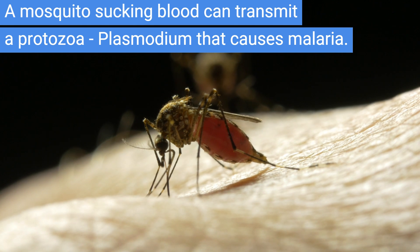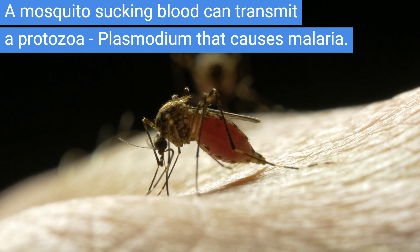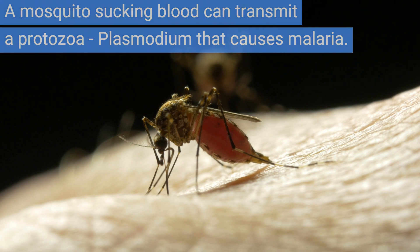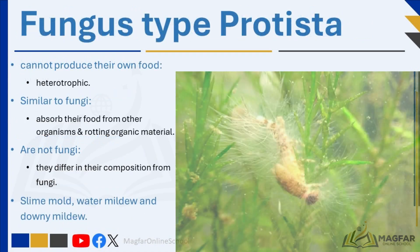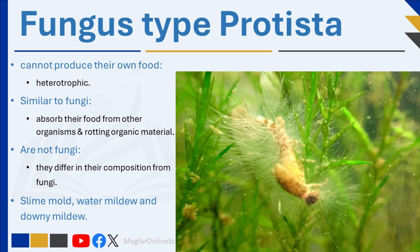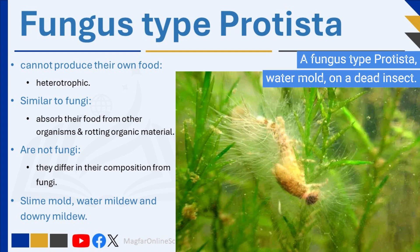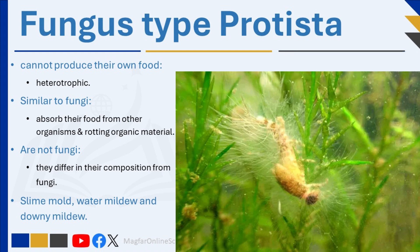The parasite Trypanosoma, which causes sleeping sickness, is spread by the tsetse fly. Fungus-type protista cannot produce their own food and absorb food from their environment — they are heterotrophic. They are similar to fungi in that they absorb food from other organisms and rotting organic material, but are not classified as fungi because they differ in their composition. Examples include slime mold, water mildew, and downy mildew.